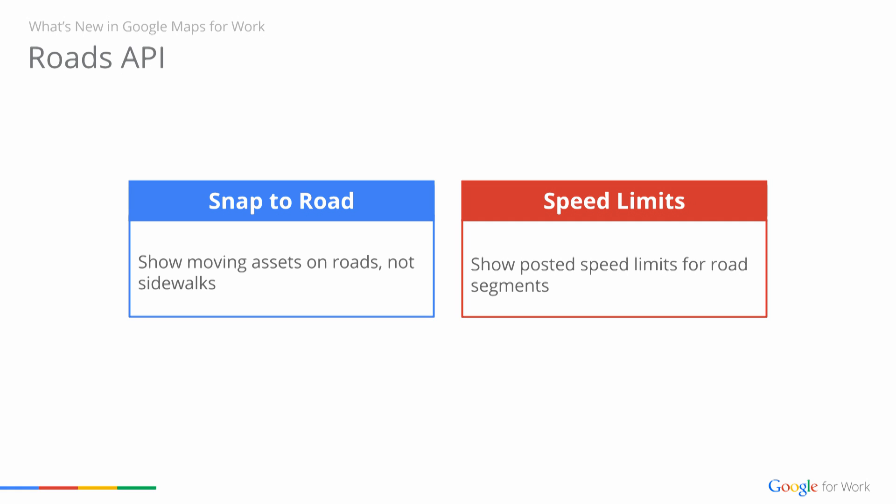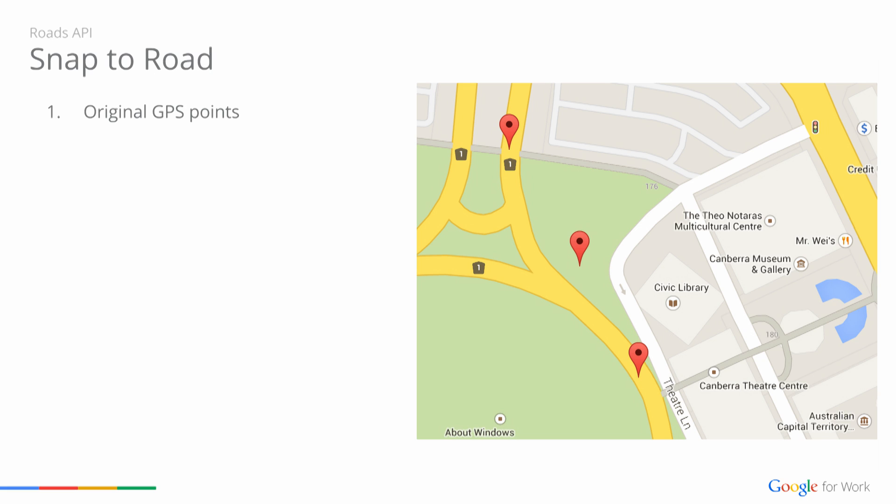Snap to Road gives you accuracy and beautiful, correct visualization of your asset tracks, while speed limits data can greatly improve safety on the road. Let's take a closer look at how Snap to Road works. For any of us who deal with location data coming from GPS devices and moving assets like trucks and taxis, we know that this data may not be the most accurate, due to inconsistencies in atmospheric conditions, urban canyons, and so on.